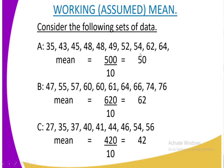For data B, the quantities are 47, 55, 57, 60, 60, 61, and so on. The total is 620, divided by 10 quantities, giving a mean of 62. For data C, similarly adding all quantities and dividing by 10, the mean is 42.